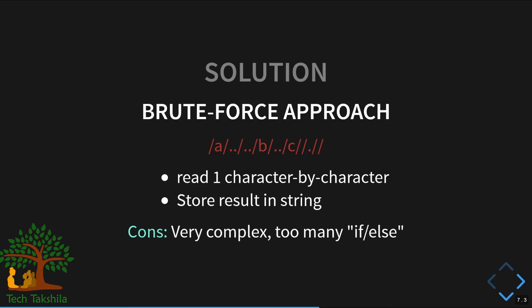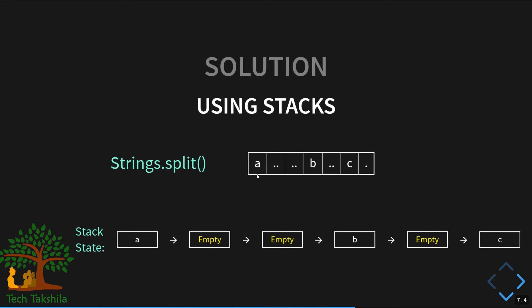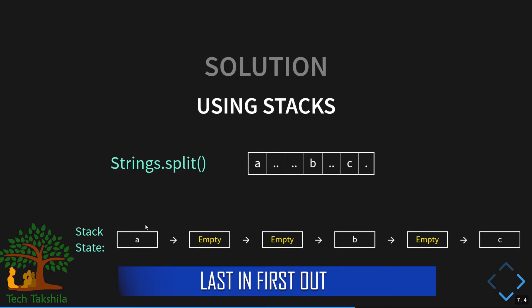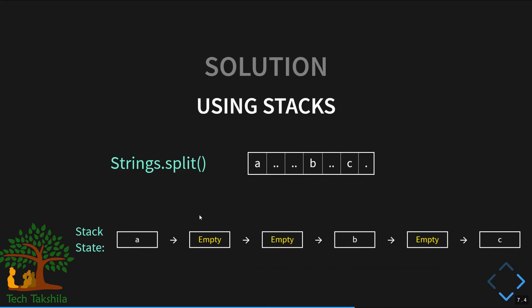With the stack approach, we first split the entire input string into elements using the String split function with '/' as the delimiter. This gives us all directories, double dots, and single dots as individual string elements in an array. We then go element by element and put them into a stack in last-in-first-out order, popping when we encounter double dots or single dots.